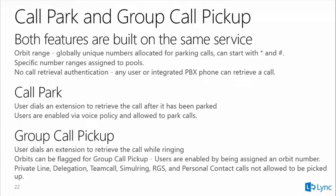Orbits should not be phone number extensions — using a star prefix (e.g., *100 to *199) is recommended, giving 100 orbit slots. Asterisk can cause problems in mixed PBX environments, but star generally works well. Don't make the range too small — there's no cost to having a hundred orbits even if you only use ten, as unused orbits are just database entries.